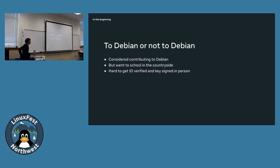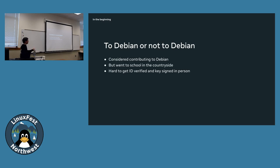At some point I was considering contributing back, but I lived at a school in the countryside. I don't have a car, and to go to town you take a bus then another bus. How do I even meet Debian people so they can vouch for me? Because you have to meet someone in person — they check your ID, you are who you say you are, and then they sign your key.